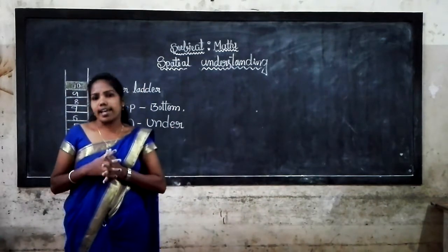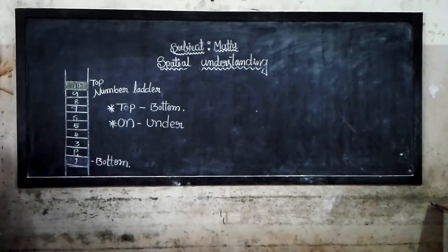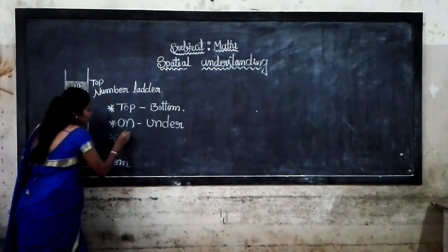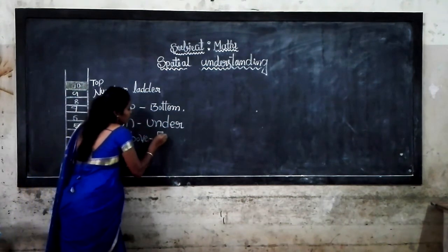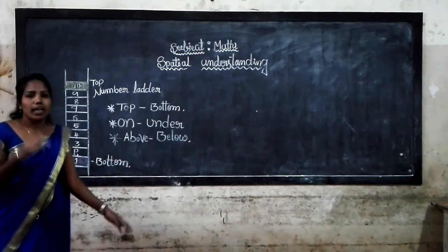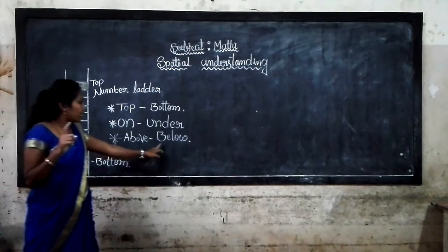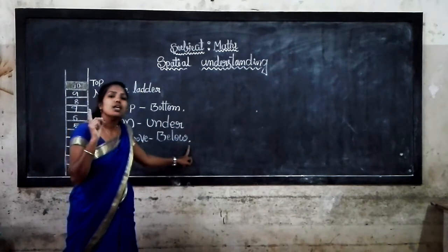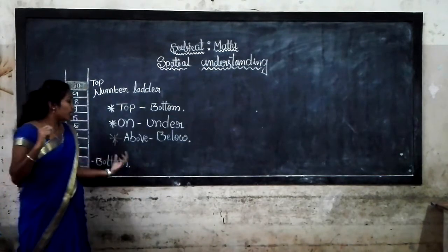The next concept is above and below. What is called above? Spell it: A-B-O-V-E, above. What is called below? Spell it: B-E-L-O-W, below. The opposite of above is below. The opposite of below is above.